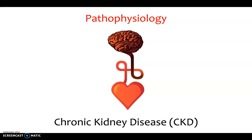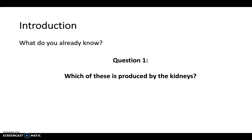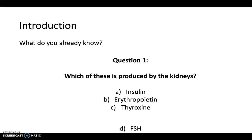Hi there, welcome to another pathophysiology video. So Easy here, and today I'm going to talk to you about chronic kidney disease. Before we get started, let's find out what you already know. Which of these is produced by the kidneys: insulin, erythropoietin, thyroxin, or FSH? Feel free to pause this video and take a moment to think about the answer.